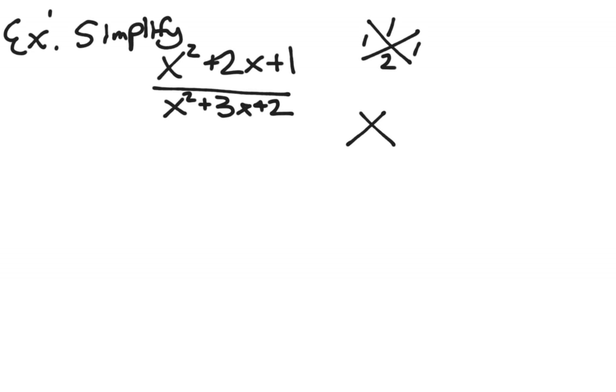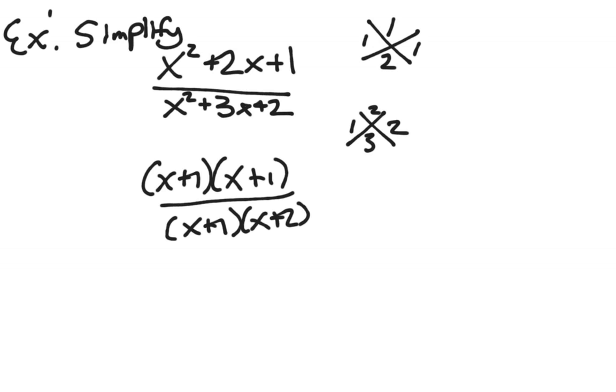For the bottom, what multiplies to 2 adds to 3. 1 and 2. So I can factor the top and bottom to x plus 1 times x plus 1 over x plus 1 times x plus 2.